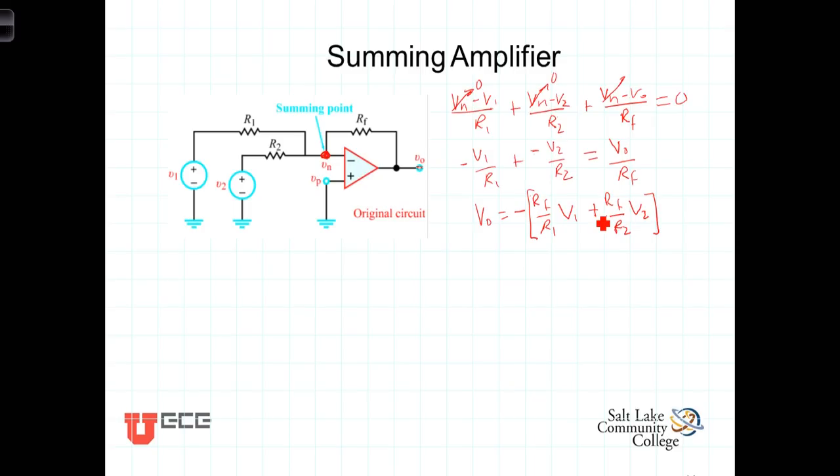And as advertised, the output then is the sum of the two input voltages scaled by the ratios of the feedback resistance to either R1 in the case of V1, or the feedback resistor divided by R2 for the second input voltage.